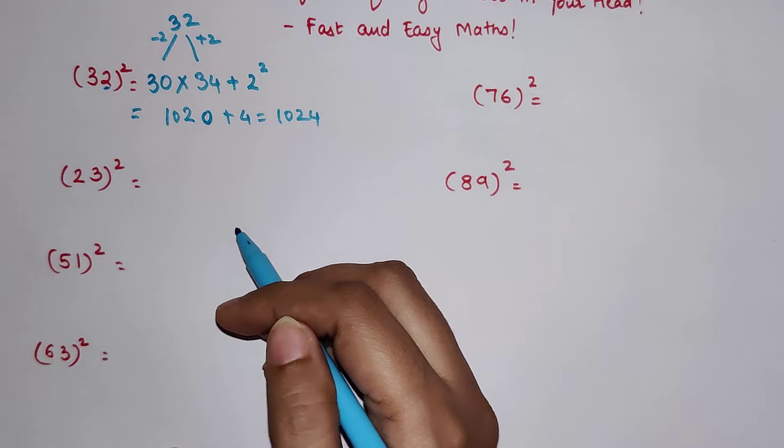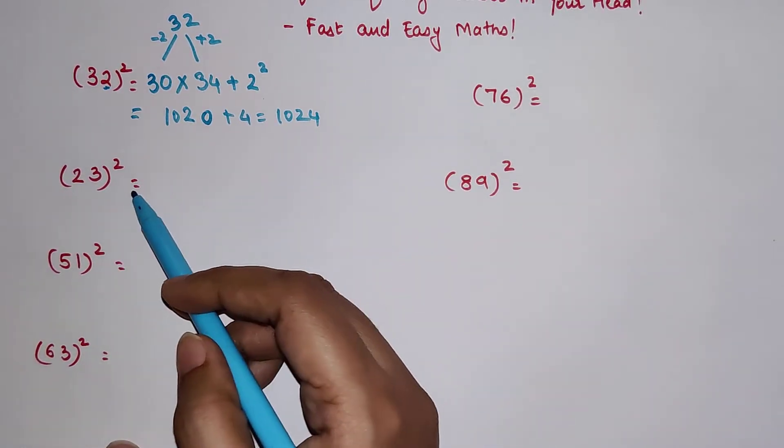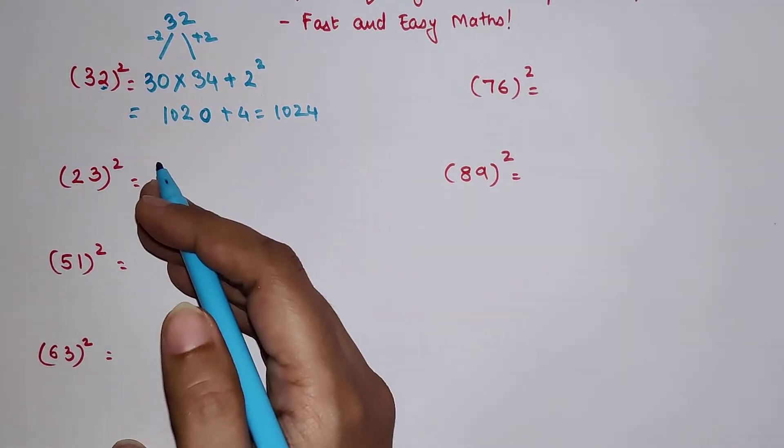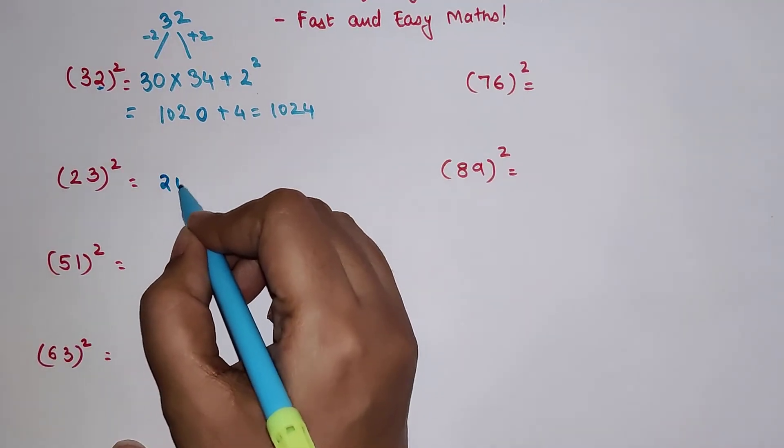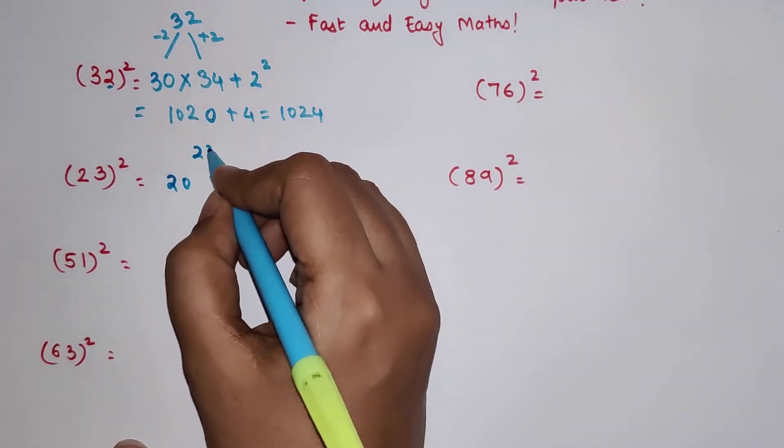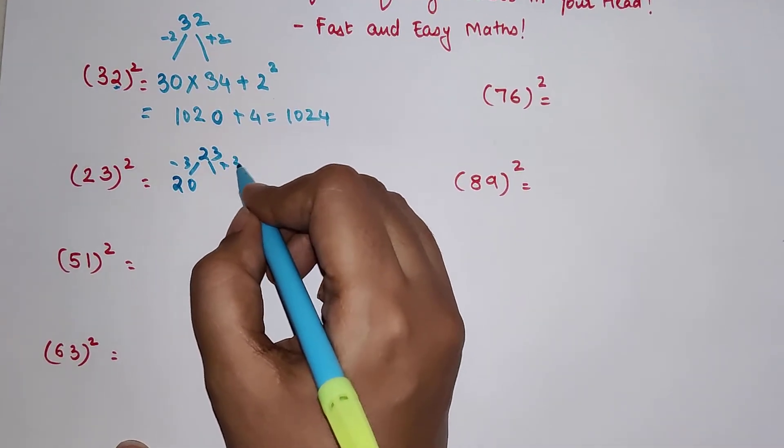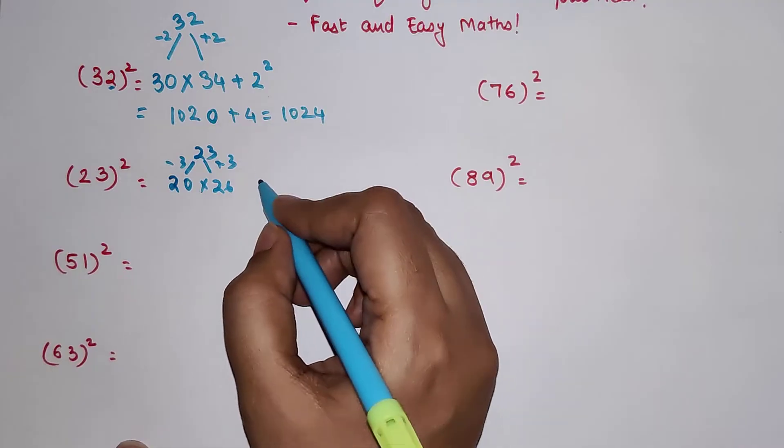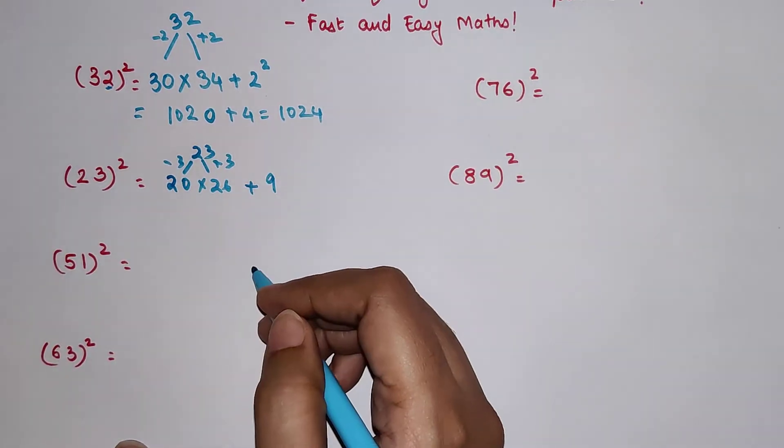The next number is 23 square. So we round it off to the closest tens but on the lesser side, so we write this as 20. And here we have 23, so we subtracted 3, so we're going to add 3 over here, so we have 26.